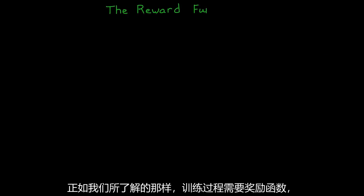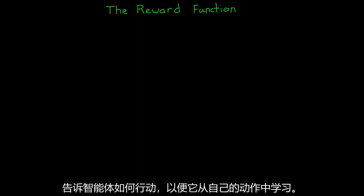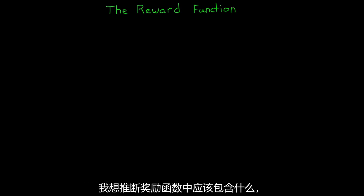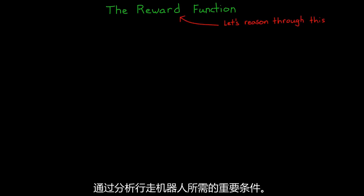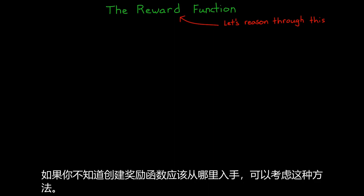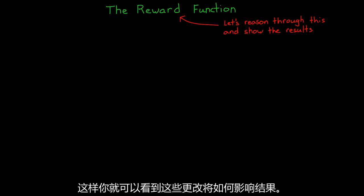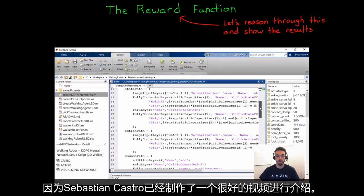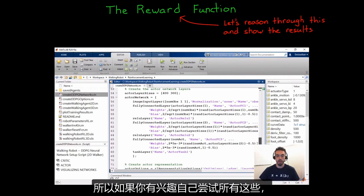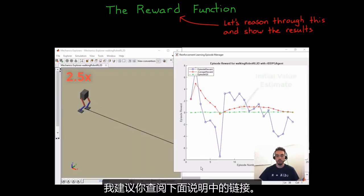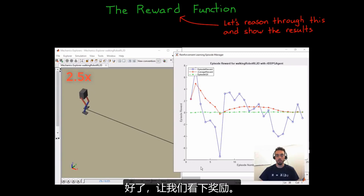As we know, the training process requires a reward function, something that tells the agent how it's doing so that it can learn from its actions. And I want to reason through what should exist in the reward function by thinking about the conditions that are important for a walking robot. This might be how you'd approach building up a reward function if you didn't know where to start. Now, I'm going to show you the results of training with this function as we create it, so you can see how the changes impact the solution. However, I'm not going to go over how to run the model because there's already a great video by Sebastian Castro that does just that. So if you're interested in trying out all of this on your own, I'd recommend checking out the link in the description below.